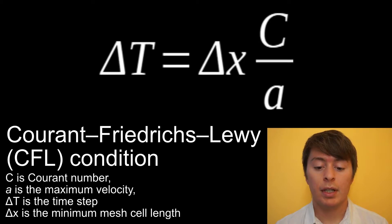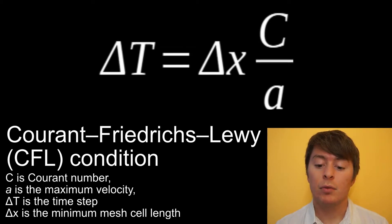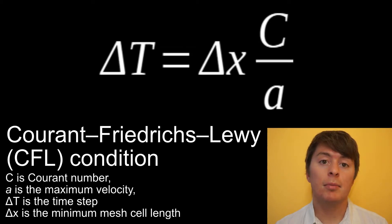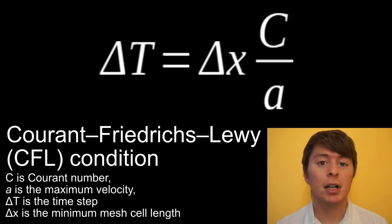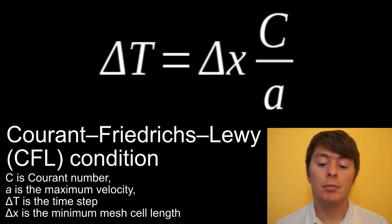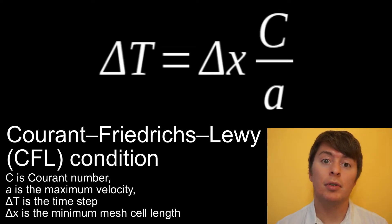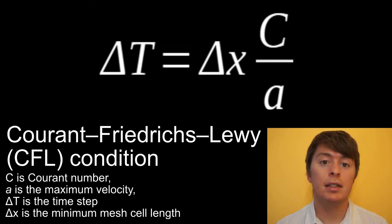In the rearrangement, we set the Courant number to 0.5, which should be half the maximum timestep. A Courant number of 0.5 is chosen as it provides tolerance for the solution.